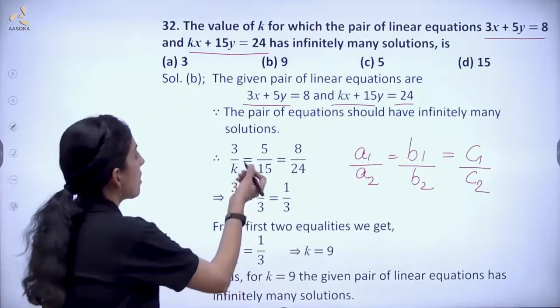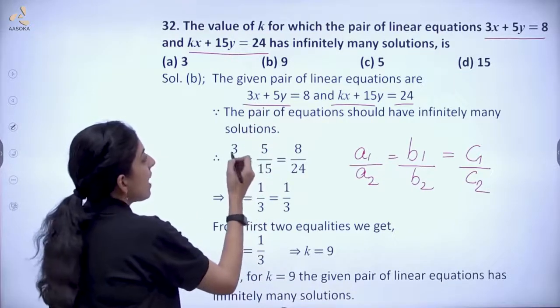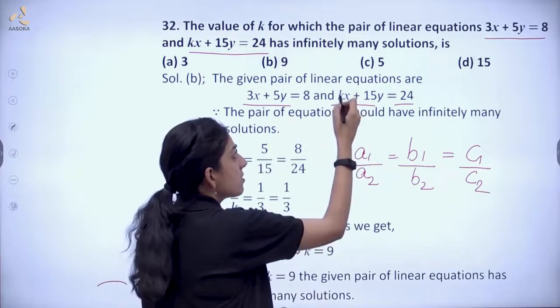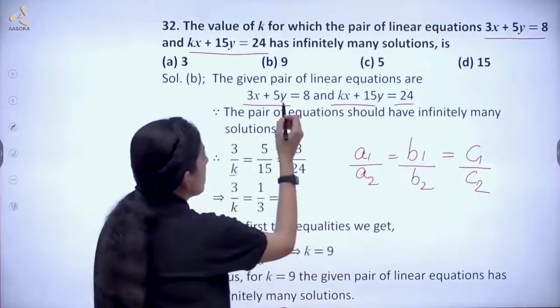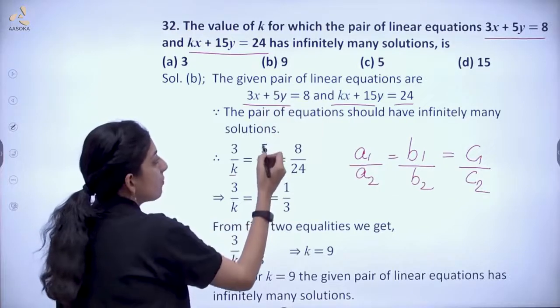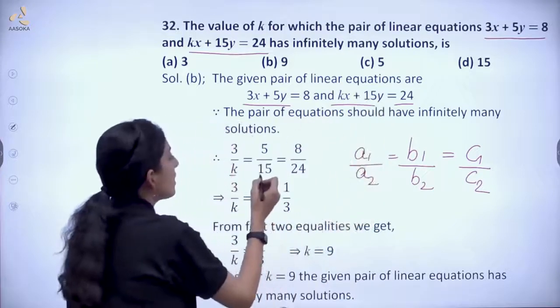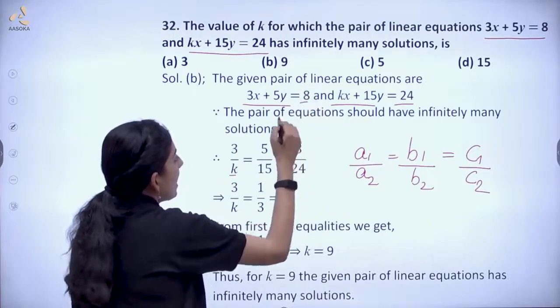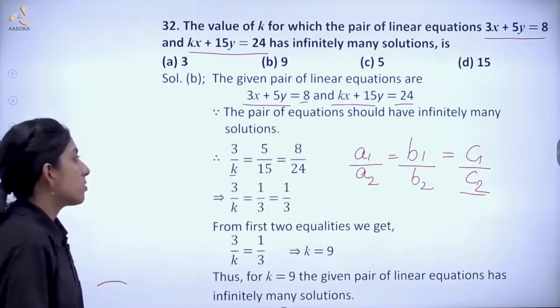Here, what is a1? The coefficient of x is 3, that is a1. And what is a2? The coefficient of x in the second equation is k, that is k. Now b1 is the coefficient of y for the first equation, that is 5. And what is b2? The coefficient of y for the second equation, that is 15. Now what is c1 and c2? c1 is the constant 8, and 24 is c2.